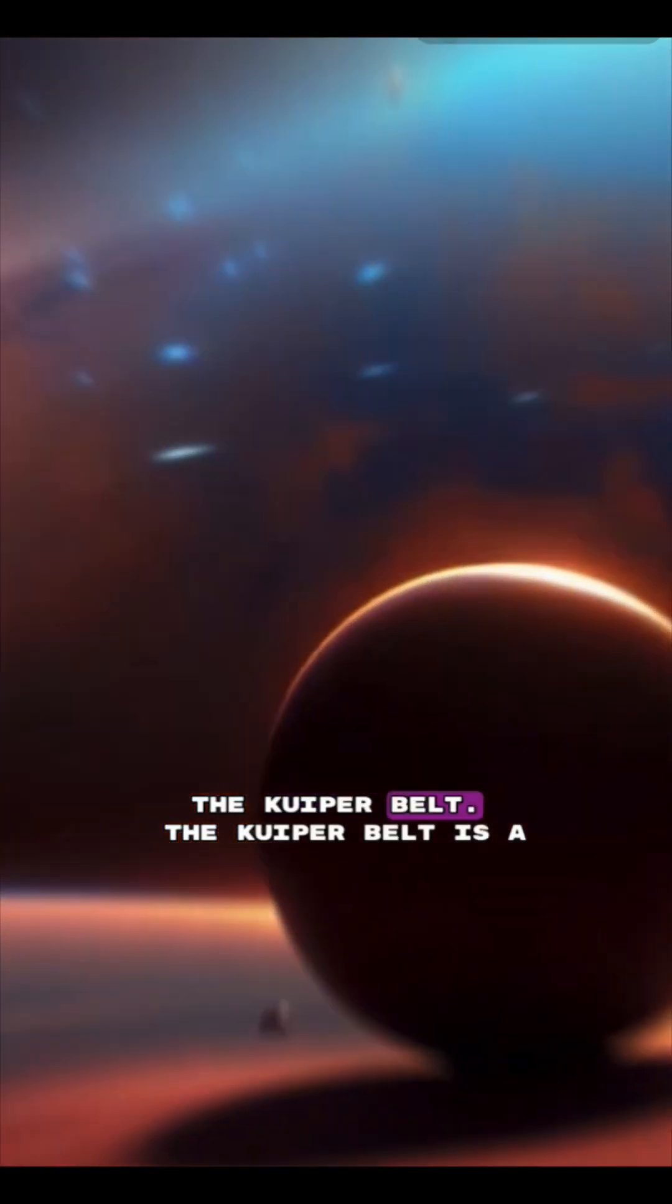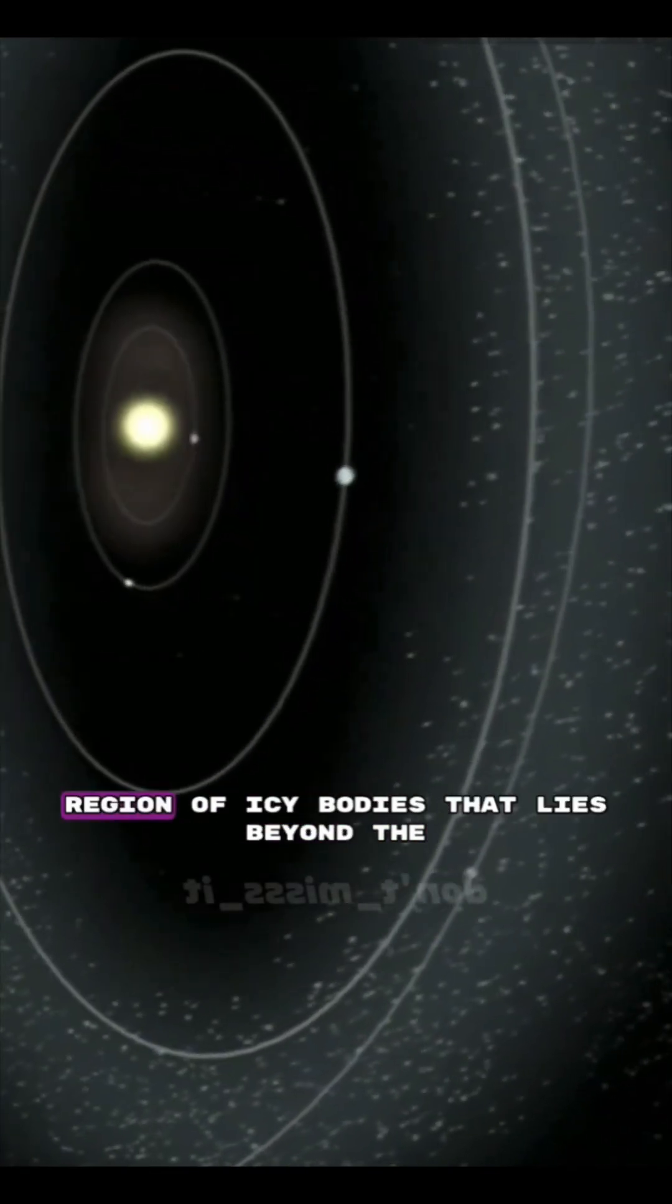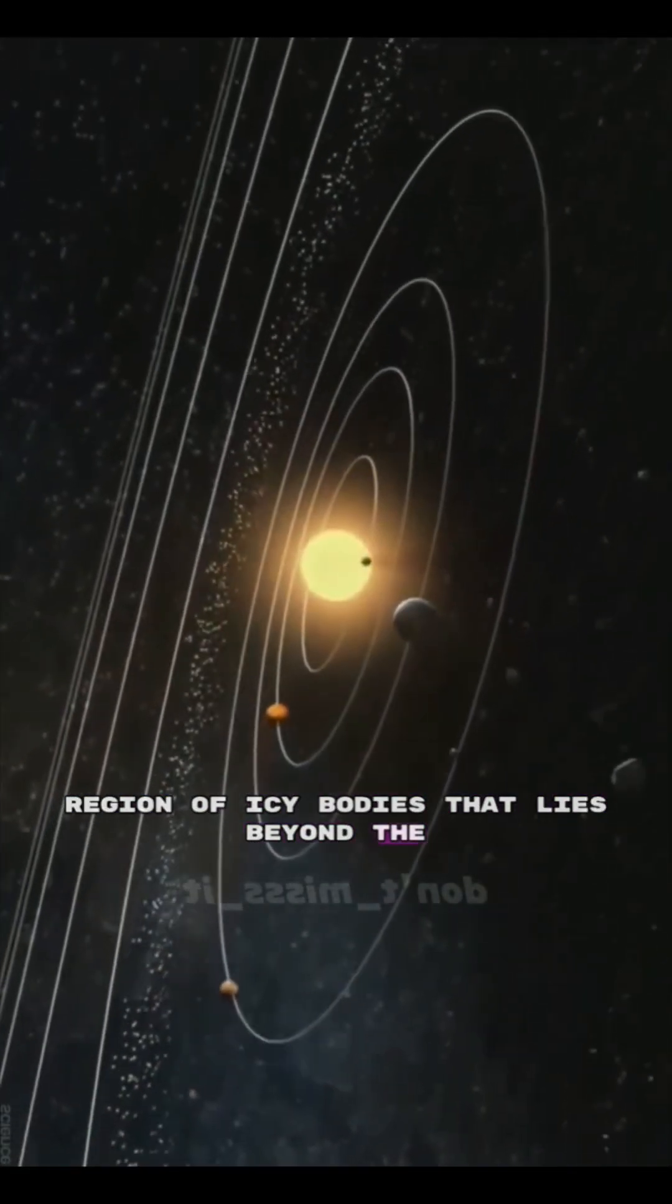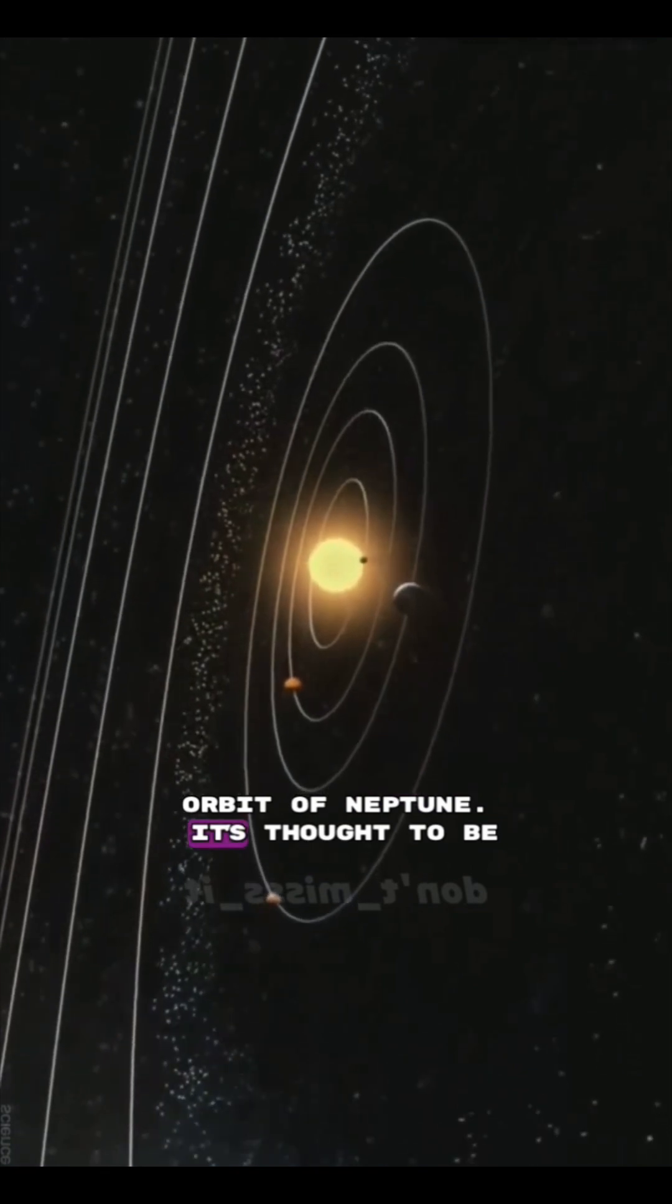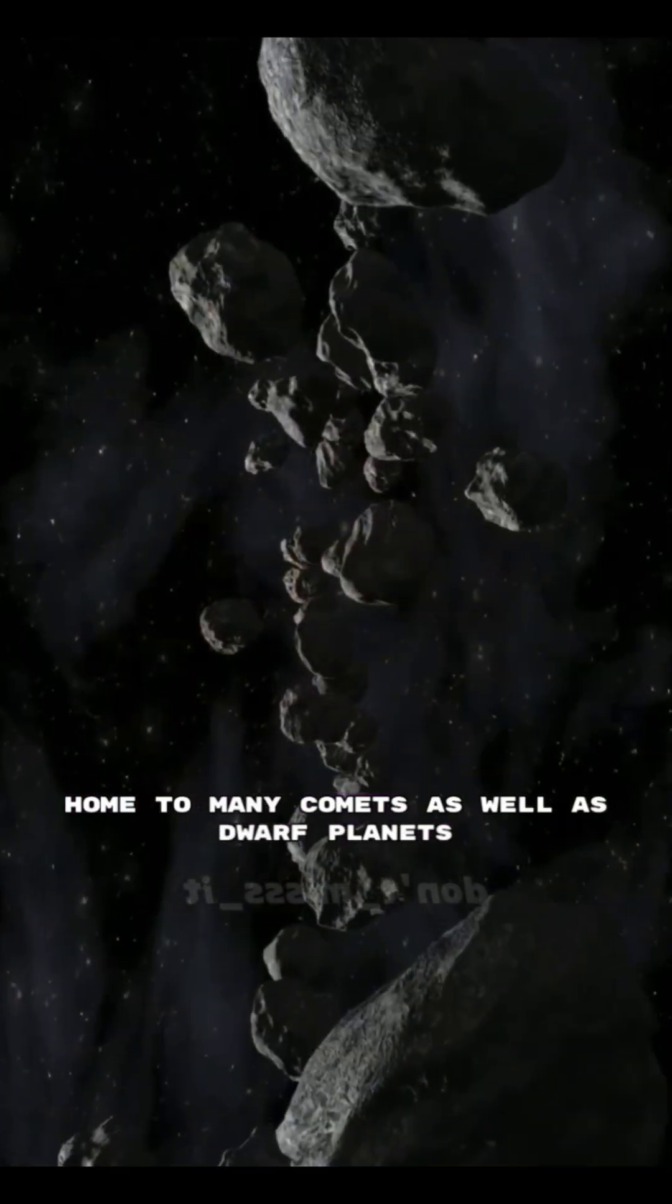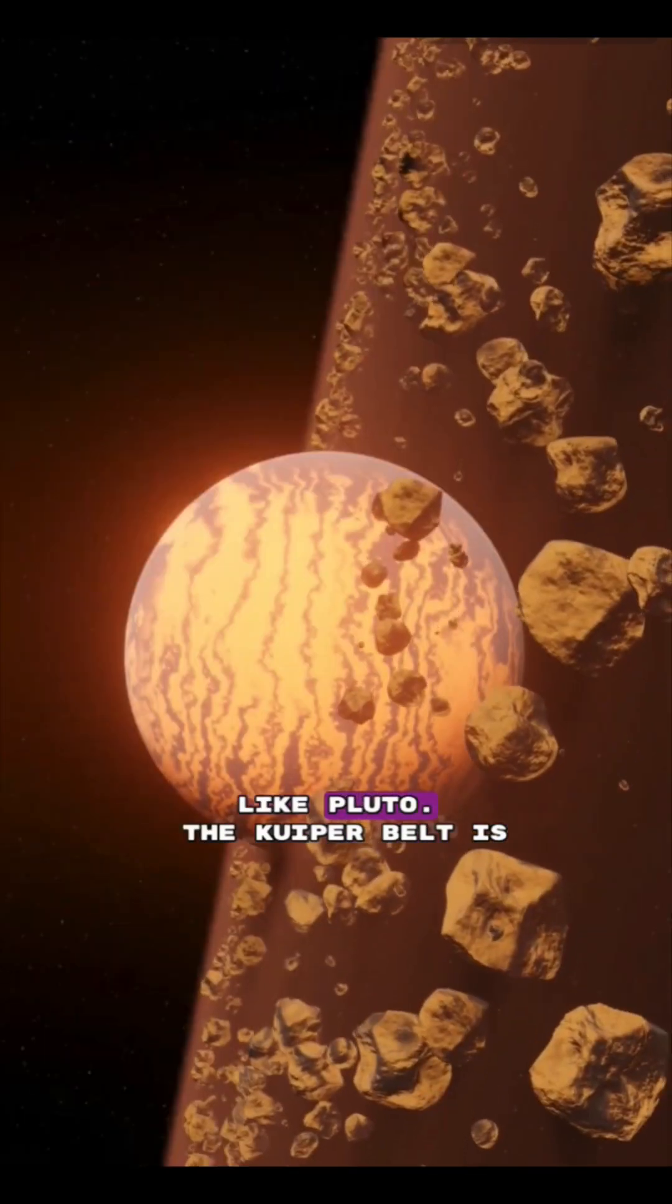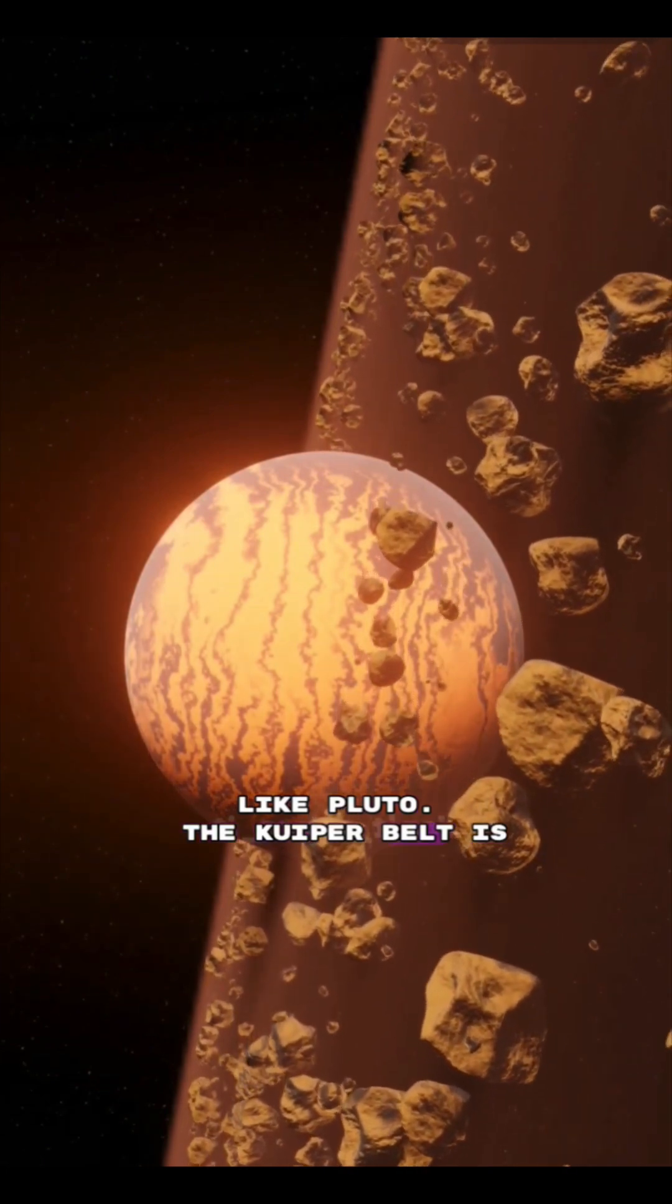Number two: the Kuiper Belt. The Kuiper Belt is a region of icy bodies that lies beyond the orbit of Neptune. It's thought to be home to many comets as well as dwarf planets like Pluto.